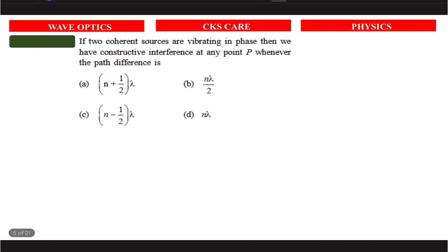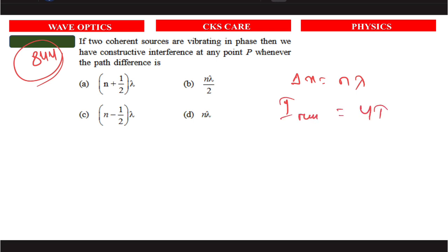The answer is converging spherical. Next, if two coherent sources are vibrating in phase, then we have constructive interference at point P whenever the path difference is nλ — that is option D, which is the right answer. The condition n ± half lambda would be for destructive interference.